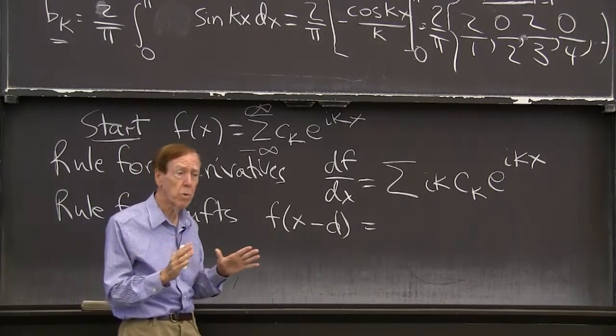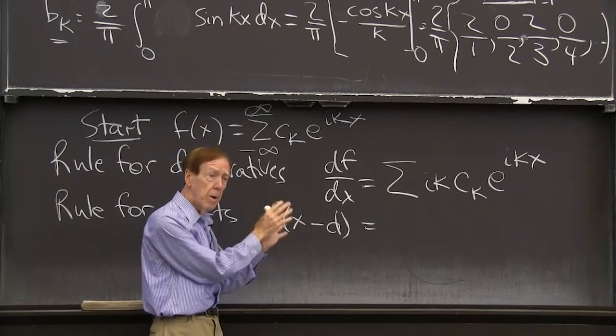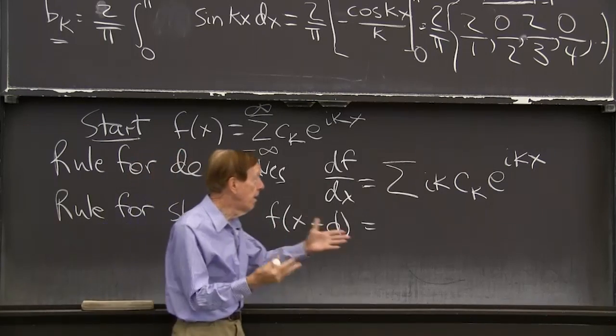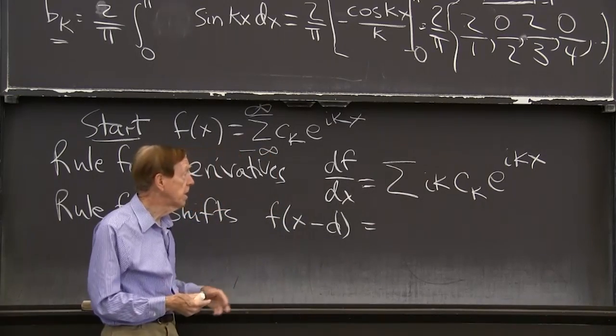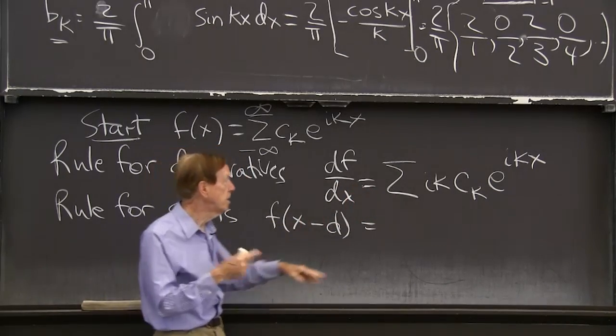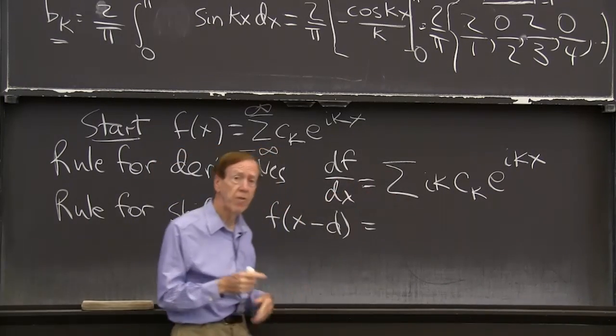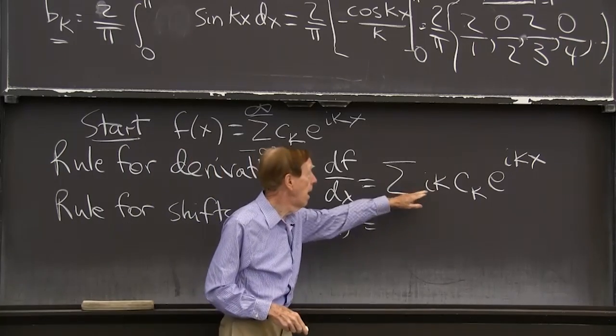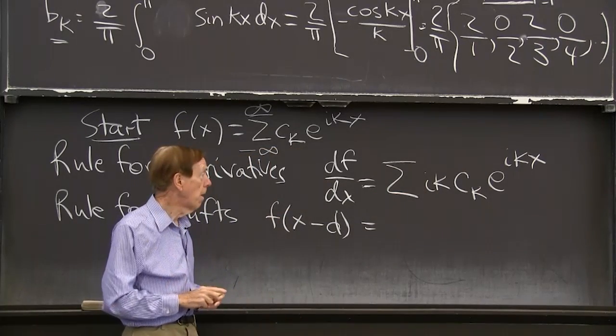That's why Fourier series is so great, because you have orthogonality. And then you have this simple rule with derivatives. You just, it just brings a factor ik. So the derivative makes your function noisier. And you have larger coefficients.